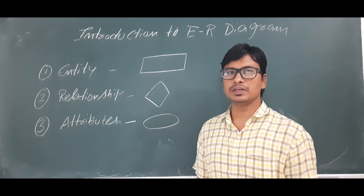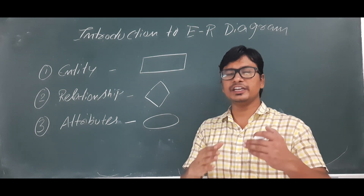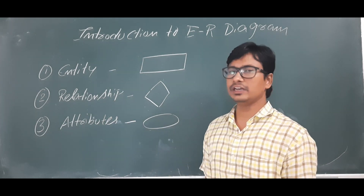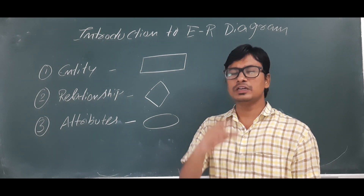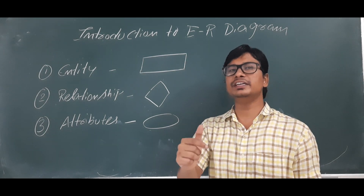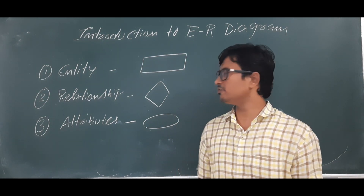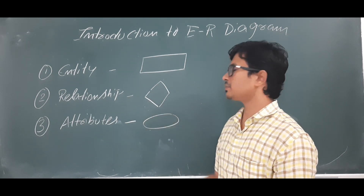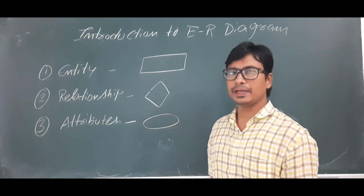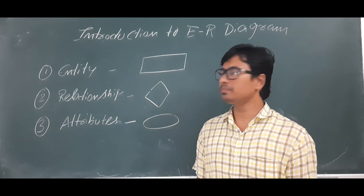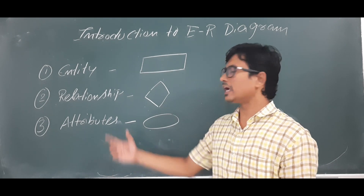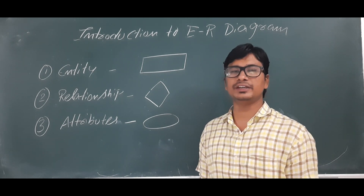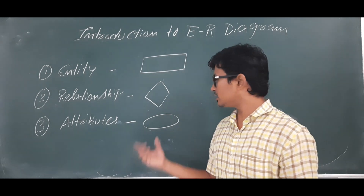Now, what is meant by relationship? The relation that exists between two entities is called a relationship. In our example, the student is studying in a department, so 'studying' will act as the relationship. A relationship is represented using the symbol called a diamond. Next, attributes tell us the properties of an entity, and are represented using an oval.